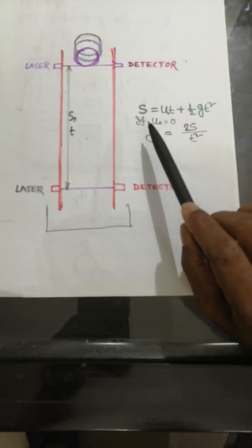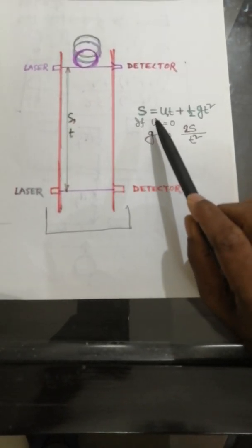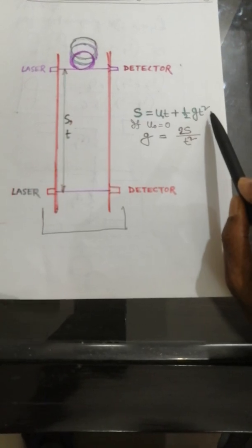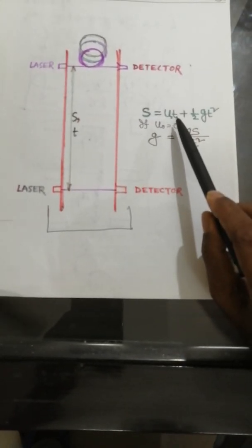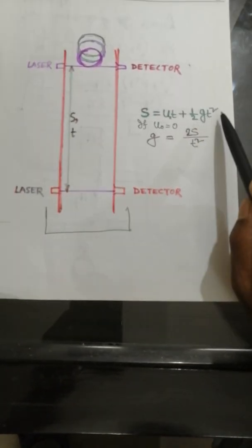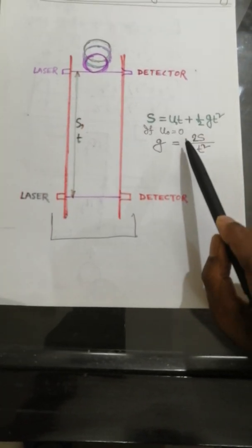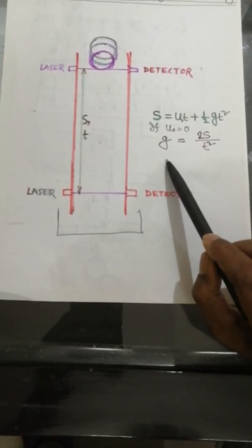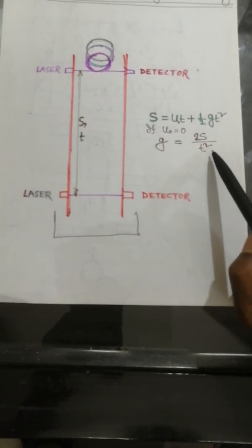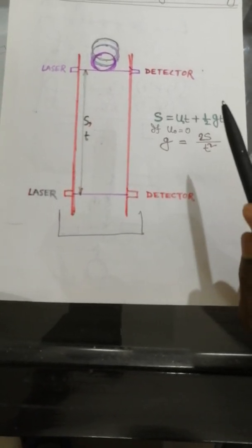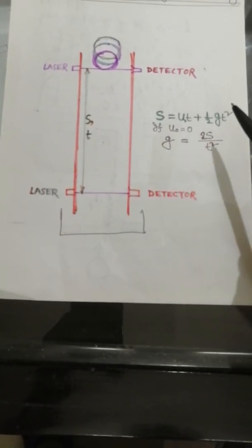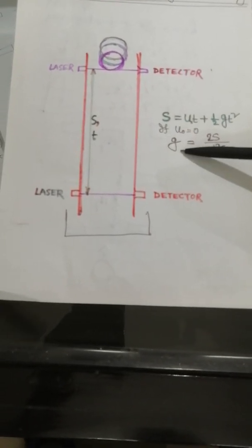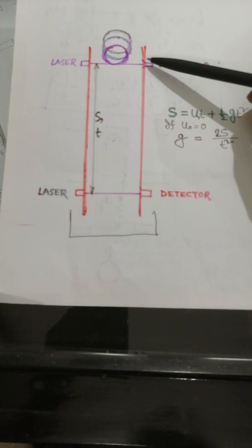then S is given as S equal to ut plus half gt squared, where u is 0. So S equals half gt squared. From this equation, we can find out g equal to 2S divided by t squared.